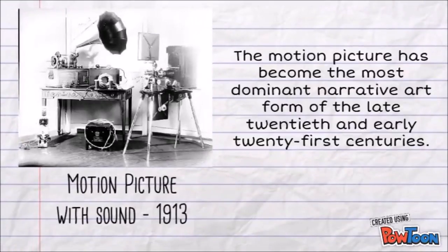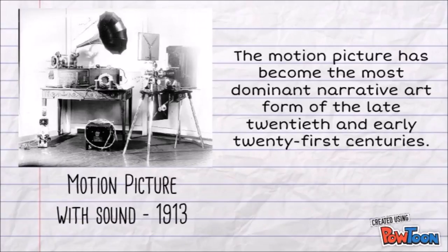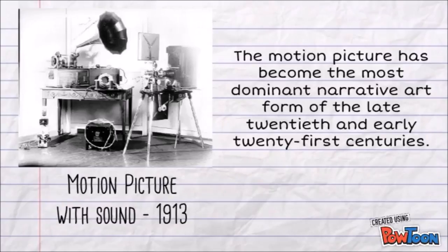Motion pictures with sound were developed in 1913. A sound film is a motion picture with synchronized sound coupled to image, as opposed to a silent film. The first known public exhibition of projected sound films took place in Paris in 1900. The first commercial sound film took place in New York City in April 1923, and films with synchronized dialogue became known as 'talkies.' The first feature-length talkie was The Jazz Singer, released in October 1927.